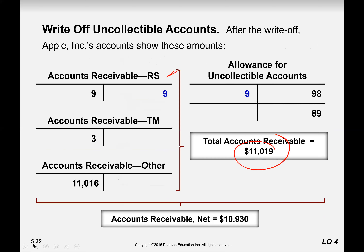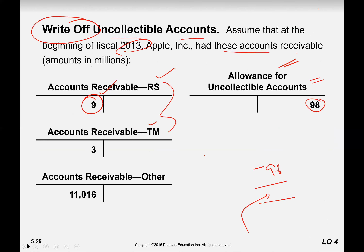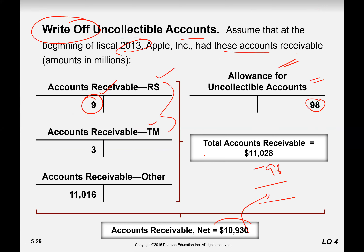So you see here the net value is 10,930. The planning is not disturbed. Even though RS didn't pay us, our net accounts receivable is the same because we charged this 9 to the allowance — our planning is not disturbed.